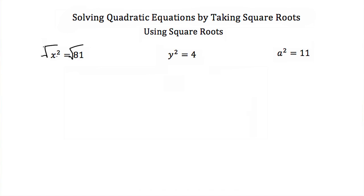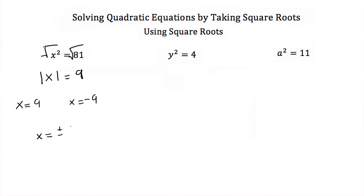Now if I take the square root of a square, I always end up with the absolute value. So we get the absolute value of x is equal to the square root of 81, which is just 9. Now if I want to drop the absolute value on x, I have to consider both the positive and negative versions of the right-hand side. So I end up with two equations: x is equal to 9, and x is equal to negative 9.